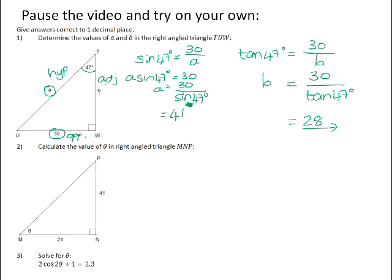Okay, question 2. Calculate the value of theta in the right angle triangle MNP. Again, we need to identify the hypotenuse, which is the side opposite the right angle. The side opposite the given angle is the opposite side, and the side that lies against the given angle is the adjacent side.